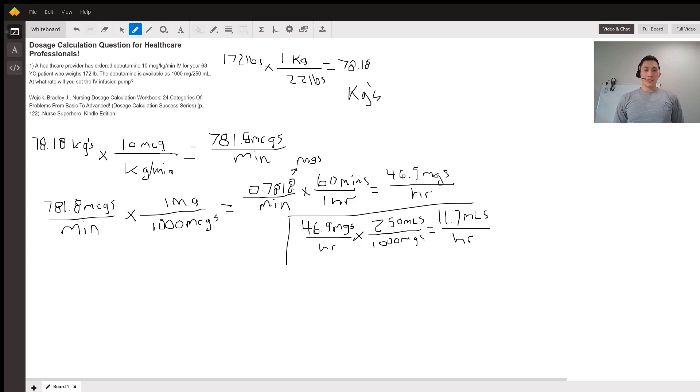Let's break it down. It's a lengthy question. I've worked out most of it here, and we'll go through the details. If you look at number one, healthcare providers order dobutamine 10 micrograms per kilogram per minute IV for a 68-year-old patient who weighs 172 pounds. The dobutamine is available at 1,000 milligrams per 250 milliliters. At what rate will you set the IV infusion pump? Let's get started.